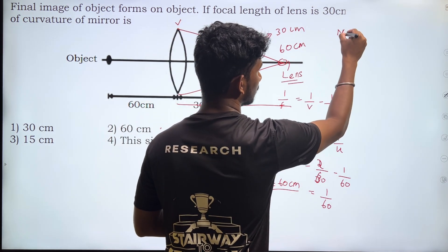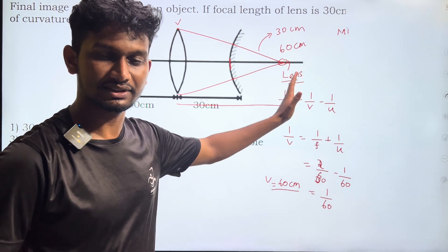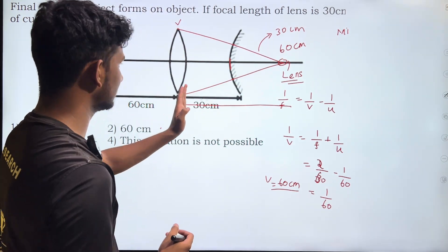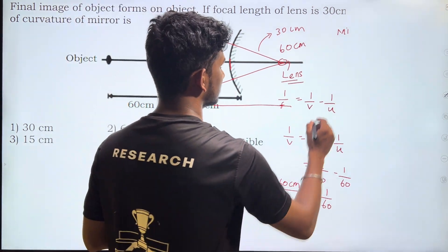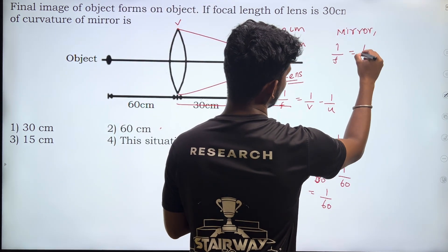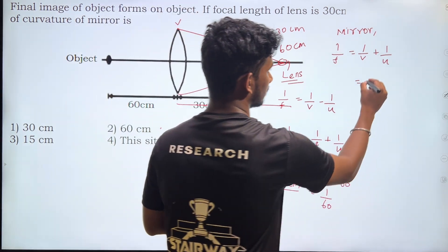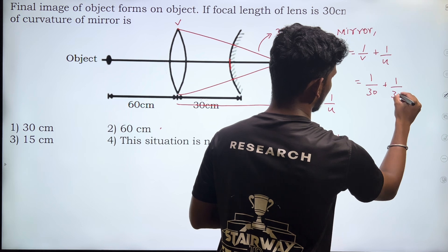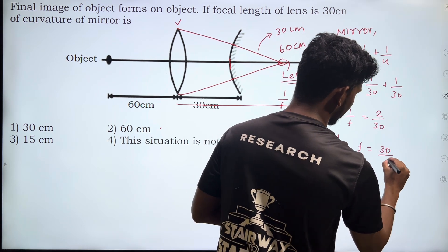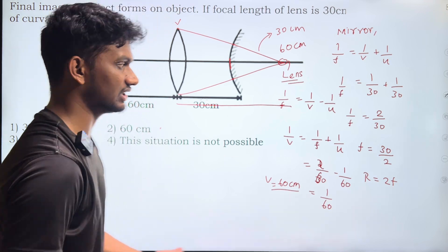Now, the mirror equation: 1/f = 1/v + 1/u. Using the distances: 1/f = 1/30 + 1/30 = 2/30. So f = 30/2 = 15 cm. The radius of curvature is nothing but 2f, that is R = 2f = 30 cm. So R is equal to 30 cm, which is option 1. I hope that clears up the misconception. If you have any objections, you can write in the comment section.